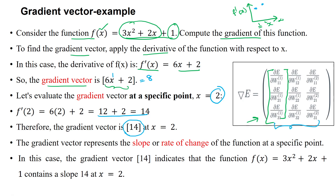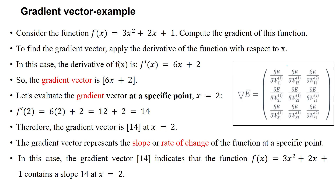Suppose you have many weight parameters — to represent all of them, we can use a two-dimensional matrix. The algorithm should stop whenever the slope or rate of change is reaching zero or close to zero, then we can stop the gradient calculation. The gradient value of 14 indicates that the function f(x) = 3x² + 2x + 1 has a slope of 14 at x = 2. Like this, we can calculate the gradients and represent them in vectors or matrix form. Thanks for watching.